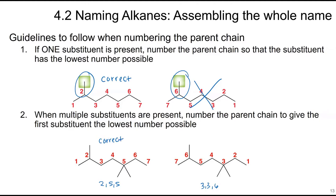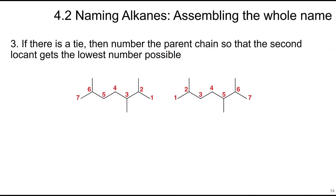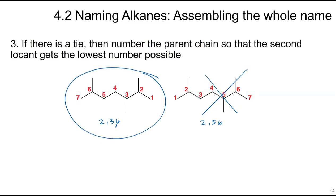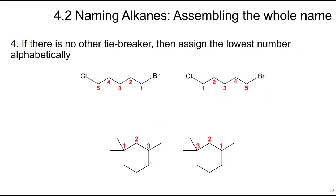If there's a tie on the first substituent's number, number so the second locant gets the lowest number possible — for example, two, three, six versus two, five, six; so two, three, six is correct. If there's still no tie-breaker, assign the lowest number alphabetically. For instance, bromine would get position one over chlorine here — one-bromo is better than one-chloro.